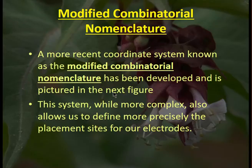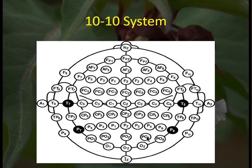A more recent system called the modified combinatorial nomenclature system or 10-10 system provides a much more logical progression using 1-3-5-7-9 numbering rather than the inconsistent CZ, C3, T3 or PZ, P3, T5 designations of the original system, where T5 wasn't even a temporal site to begin with. This is a much more logical system and hopefully will be adopted soon. That's a brief review — if you're ever confused about the basics, you can review this presentation again.